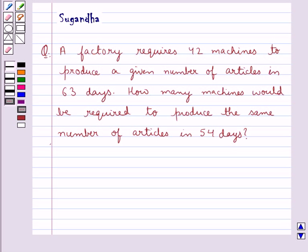Hello and welcome to the session. Today I will help you with the following question. The question says, a factory requires 42 machines to produce a given number of articles in 63 days.